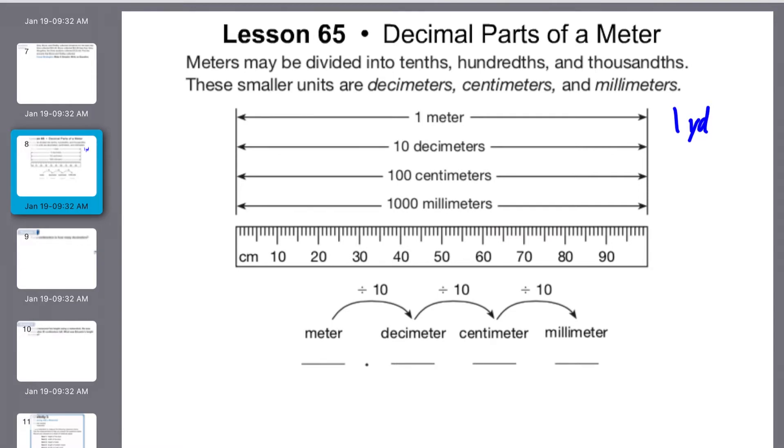Meters are nice because they're split up into groups of ten. So you have meter and then ten decimeters equal one meter, 100 centimeters equal one meter, and a thousand millimeters equal one meter.